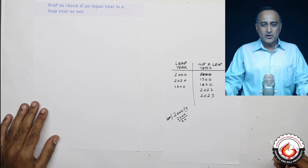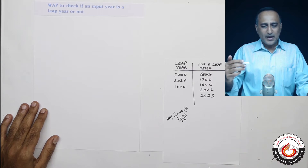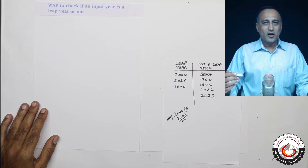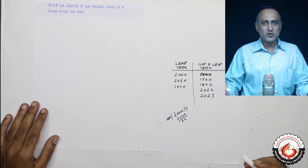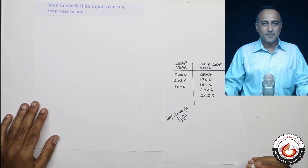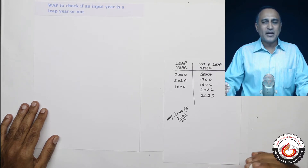What actually happens is that every year we have about close to 6 hours — a little less than 6 hours — extra. So at the end of 4 years we turn that fourth year into a leap year. This way, normally every fourth year happens to be a leap year.